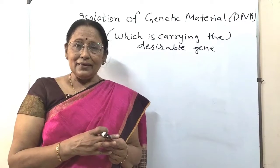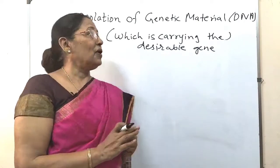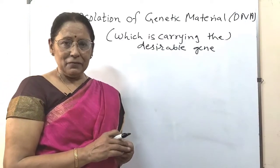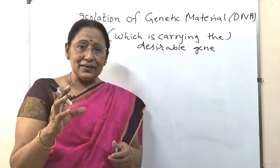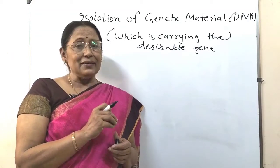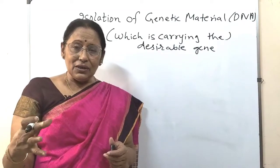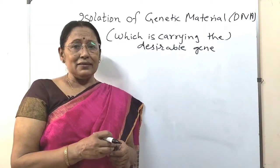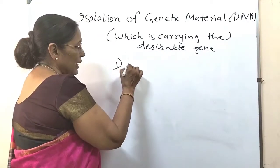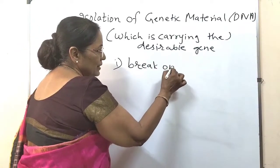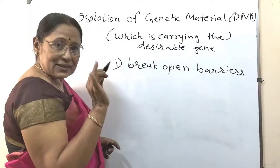The DNA is present inside the cell, whether it is prokaryotic or eukaryotic. There are three steps for the isolation of genetic material. In a eukaryotic cell, the DNA is present inside the nucleus behind the cell membrane. If it is a plant, fungal, or bacterial cell, there is an extra cell wall as well. So the first step is to break open the barriers enclosing the DNA — the cell wall and cell membrane.